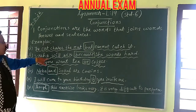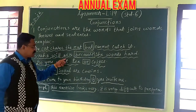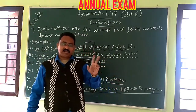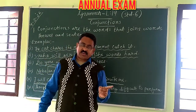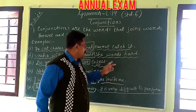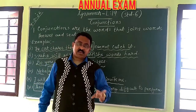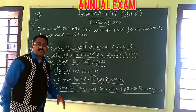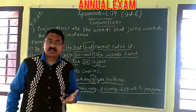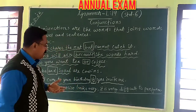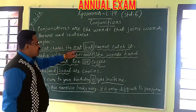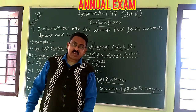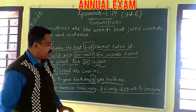Next example: 'Sliha will win. She worked hard.' These are two sentences. 'Sliha will win' is one sentence, 'she worked hard' is another. We join them with the conjunction 'because': 'Sliha will win because she worked hard.'